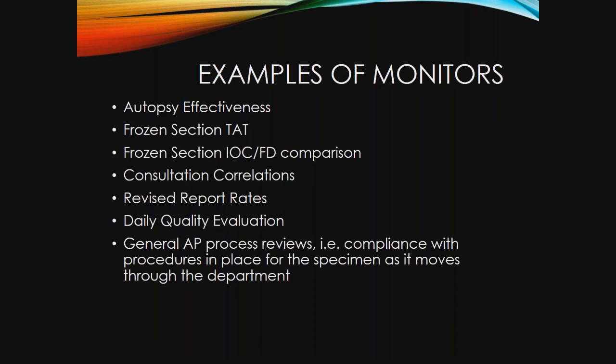General AP process review involves a random sample of cases reviewed from start to finish — from the time of patient registration to the time the report was signed out — to ensure that every step of the process was correct. This one can be somewhat labor intensive so the sample size is often on the smaller side, like 20 or 25 cases, but it is revealing to see where your issues are in terms of that process. The last one is QNS — quantity not sufficient — which tracks the number of times samples were sent out and QNS was determined, since it is obviously a waste of resources if we are sending out samples that are QNS.